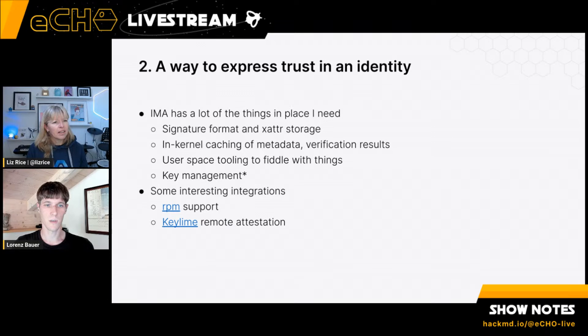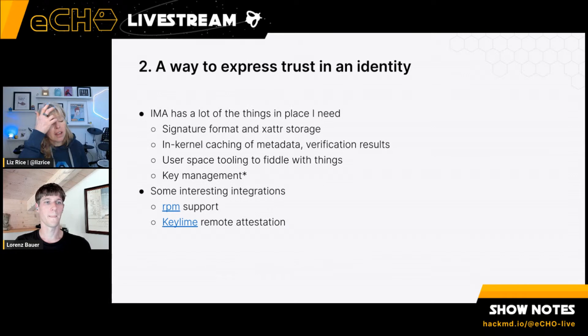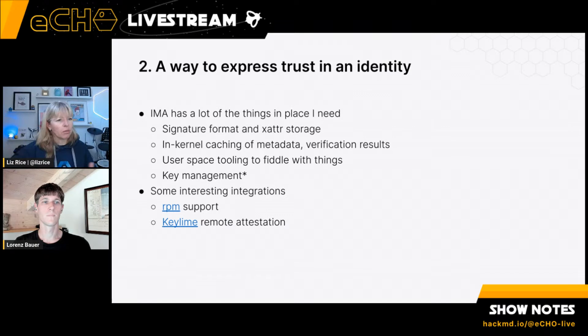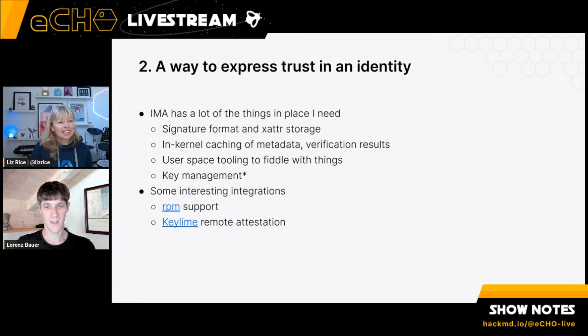Key Lime is an interesting integration — the idea of being able to say what your system is running and that it's secure and unattacked. My recollection is that Key Lime allows validation using a hardware security module external to the machine. What I want to say is there are interesting avenues here: this could be integrated with other parts of the ecosystem, like cloud-native signatures using Cosign, Notary, or SigStore.